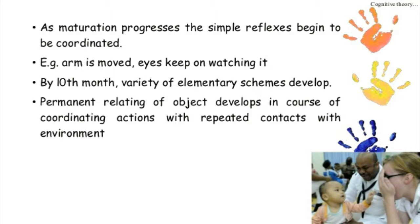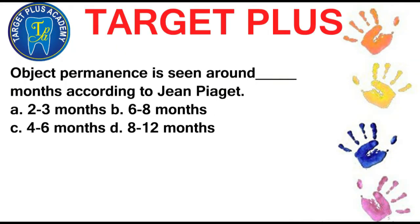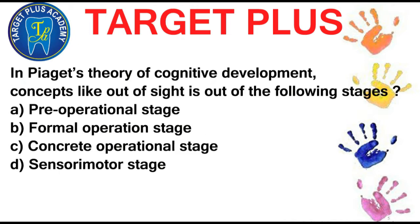Object permanence is seen around 8 to 12 months according to Jean Piaget. Object permanence is the understanding that objects continue to exist even when they cannot be perceived — heard, touched, smelled, or sensed in any way. When an object is hidden from sight, infants under a certain age often become upset that the item has vanished. In Piaget's theory, the concept 'out of sight is out of mind' belongs to the sensory-motor stage, where object permanence dwells.